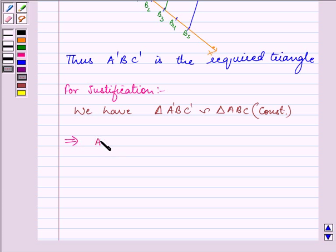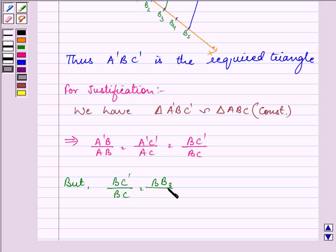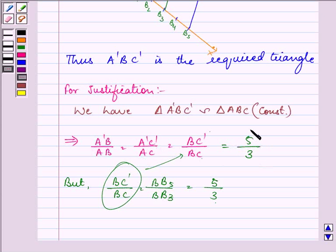So we have A dash B upon AB equal to A dash C dash upon AC is equal to BC dash upon BC. But we have drawn BC dash upon BC equivalent to BB5 upon BB3 which is equal to 5 upon 3. So this means that BC dash upon BC is 5 by 3, so the corresponding sides are proportional to each other and the ratio is 5 is to 3.